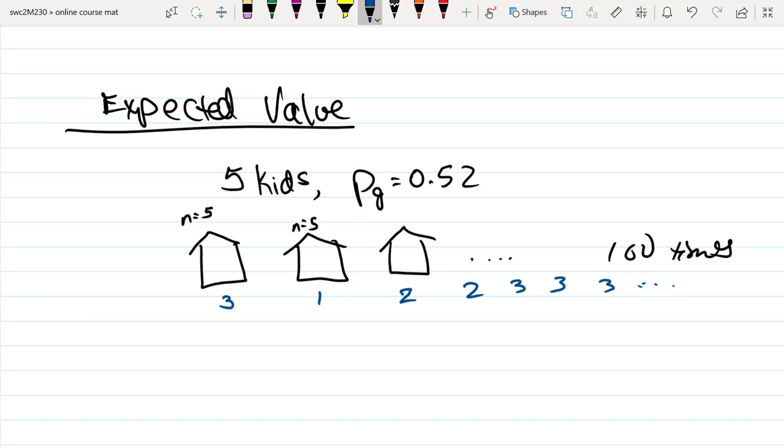Whatever that number is out of 100, the math that we're going to look at suggests that it's going to be, on average, something like this: you would expect an average of 2.6 girls in each of those households where there are five kids.